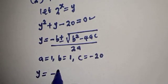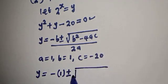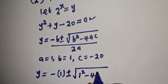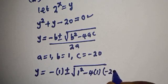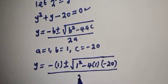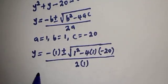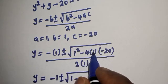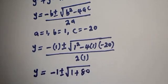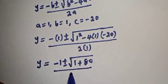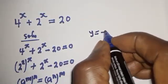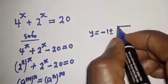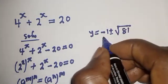Let's substitute: y is equal to minus 1, plus or minus square root of 1 squared minus 4 multiplied by 1, multiplied by minus 20, over 2 times 1.